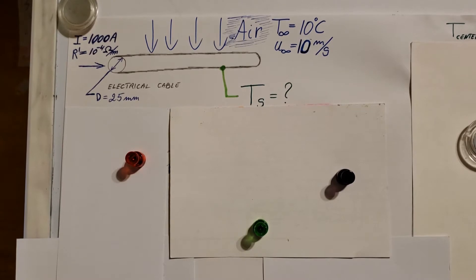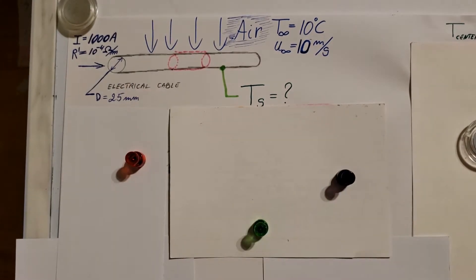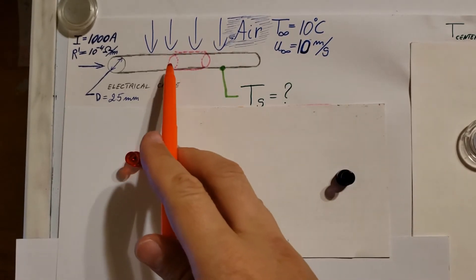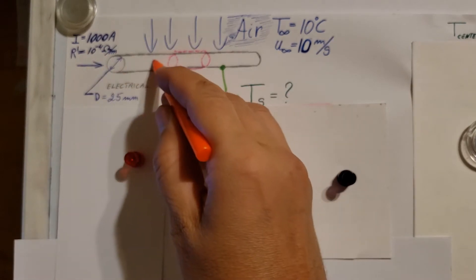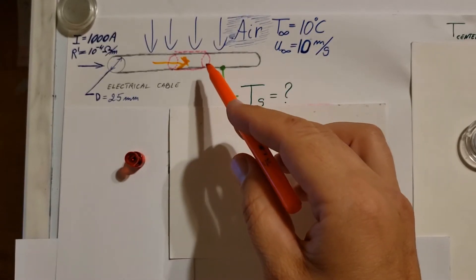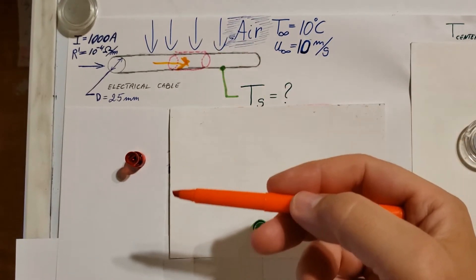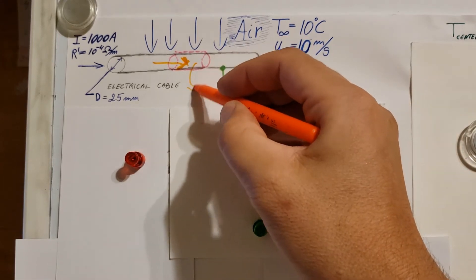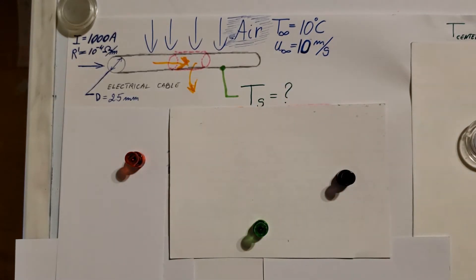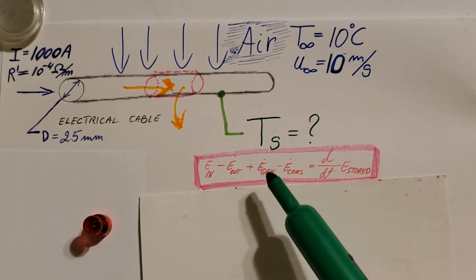To start, I'm going to draw a control surface on the wire. Through this control surface, we have energy coming in through the current, and we also have energy leaving through the wind taking heat away via convection. To write this up, let's do an energy balance. We have e-in, e-out, energy generated, energy consumed, and a change in energy stored.